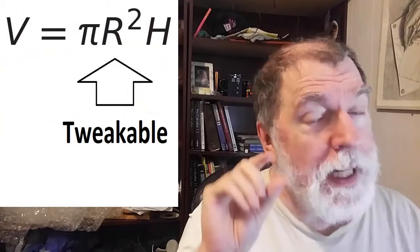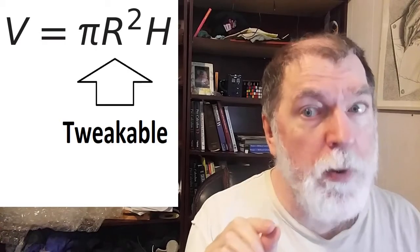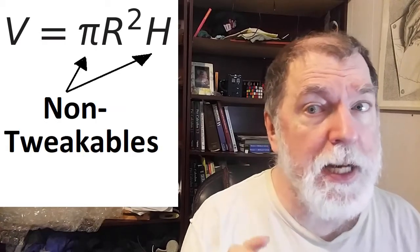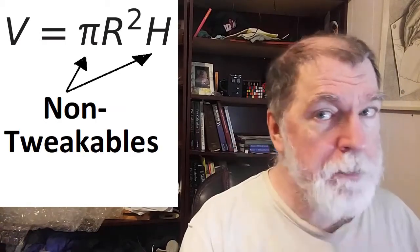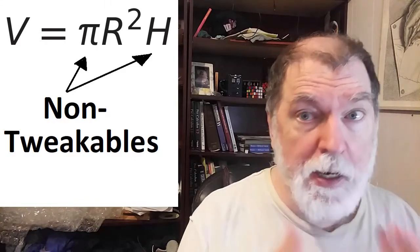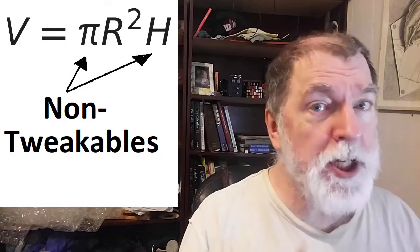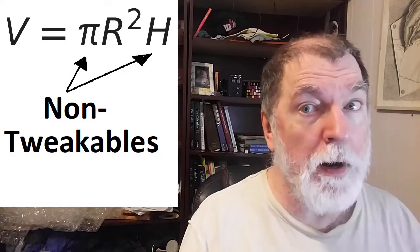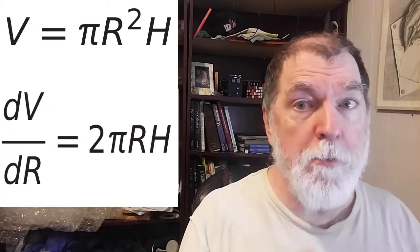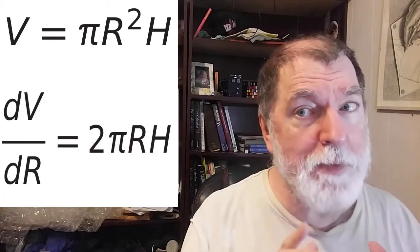In this case, it's the radius that we're tweaking and the height is staying constant. We treat pi and H as constants, and we differentiate with respect to R. And we end up with 2 pi times R times H.